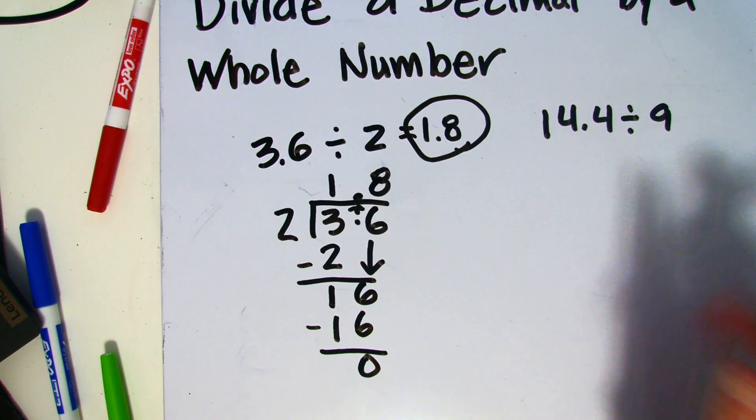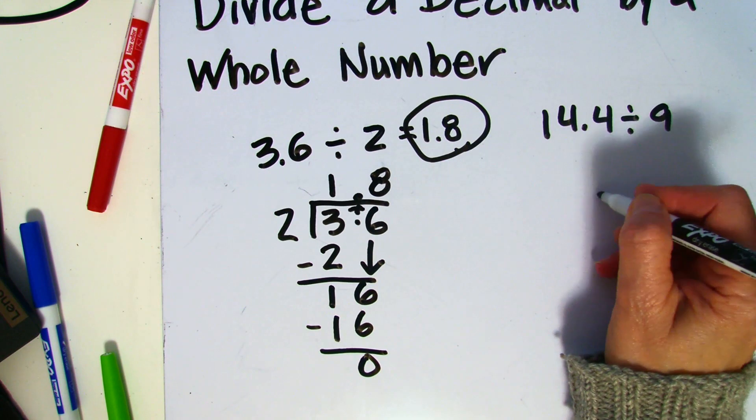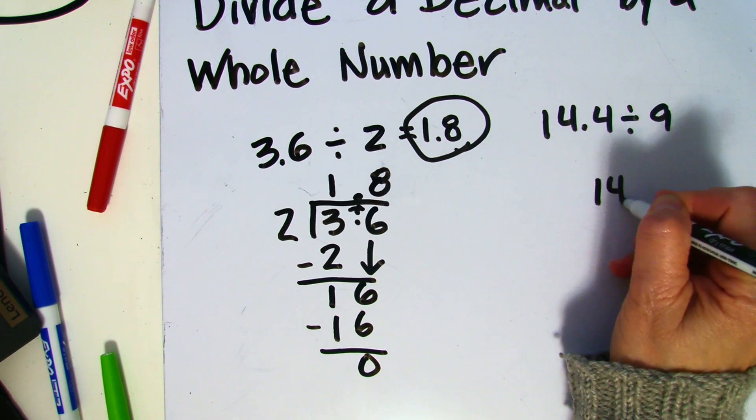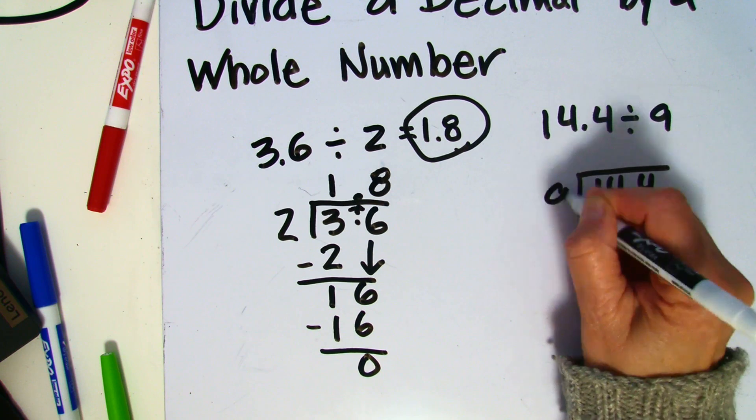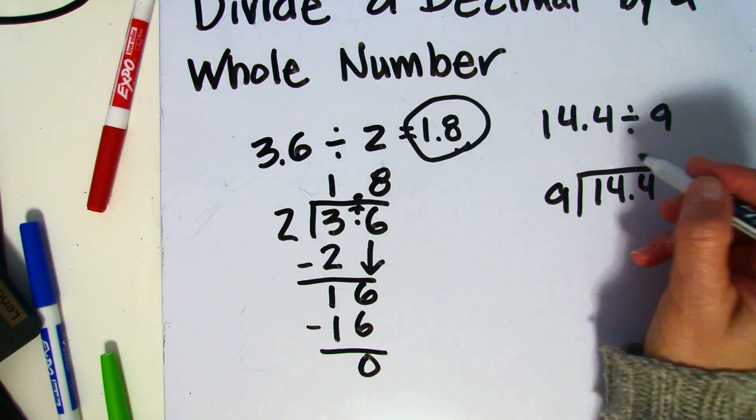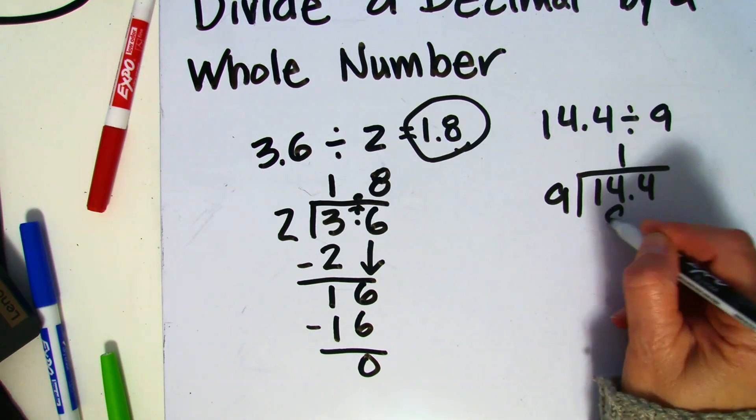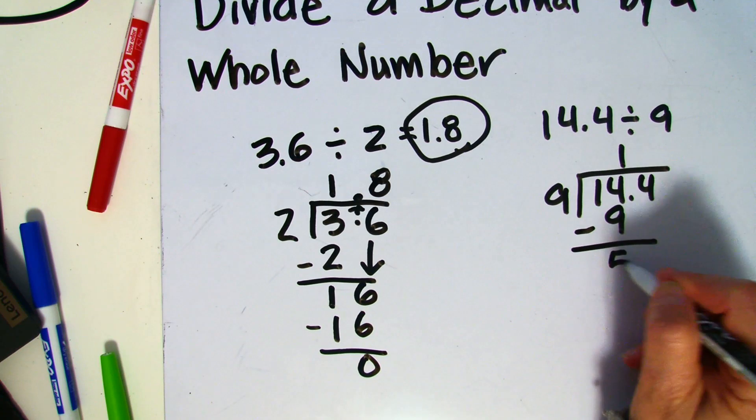Let's do another example. Here we have 14 and 4 tenths divided by 9, and so I'm going to rewrite it to look like this. 9 goes into 14 one whole time. I'm going to take the difference between the 2. I get 5.